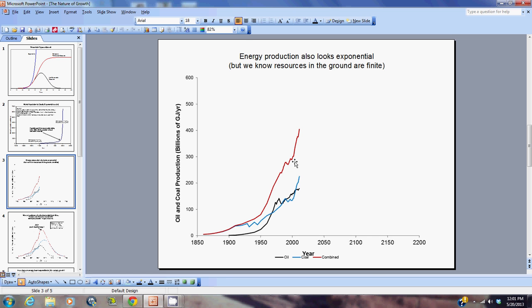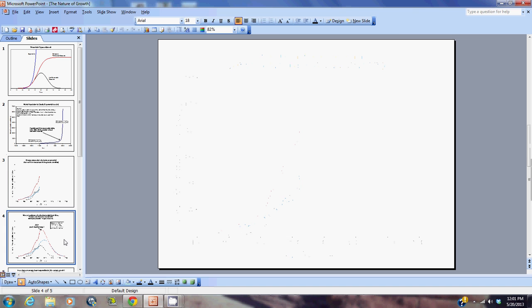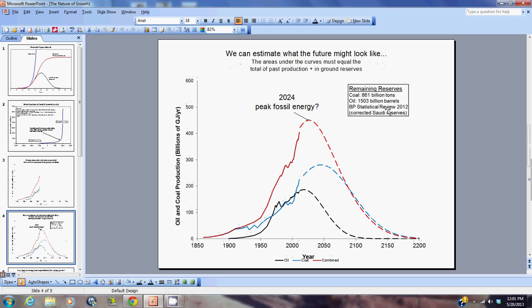And we can estimate what the future might look like. I pulled this data from the BP statistical review from 2012, where they gave total world coal and oil reserves of 861 billion tons of coal and about 1,503 billion tons of oil.